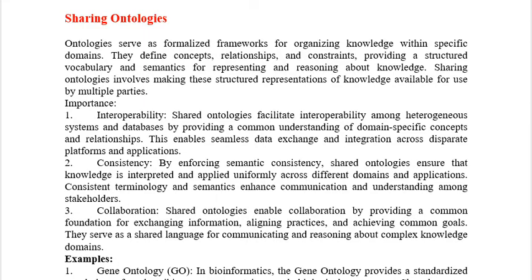Basically, ontology is nothing but the study of existence. For example, if you have a diamond, it can be a shape of a particular figure, or it can be a jewelry item you wear, or it can be the playing cards symbol. In different scenarios, the diamond will carry a different meaning and be portrayed differently.